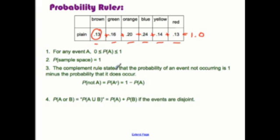The complement rule states that the probability of an event not occurring is 1 minus the probability that it does occur. This looks ugly. When you look at it, it looks confusing. The probability of not A is equal to 1 minus the probability of A. What does this mean? Let's do an example.